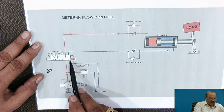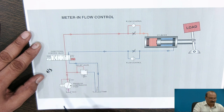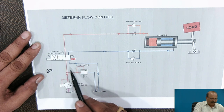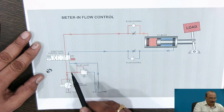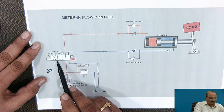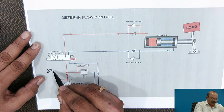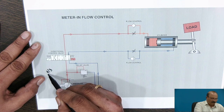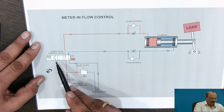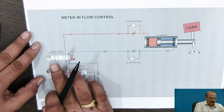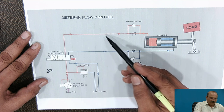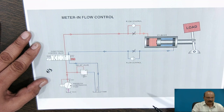Whenever we operate this knob, we can control the flow. The middle position is related to normal flow — whatever flow is there will come back to the storage tank. In this diagram, we have connected it for flow in the upward direction. So we are calling it a 4 ports and 3 positions directional control valve — the first number is related to the 4 ports and the second to the 3 positions we can change.